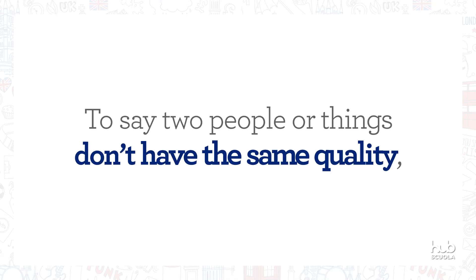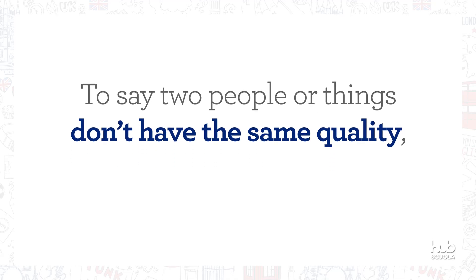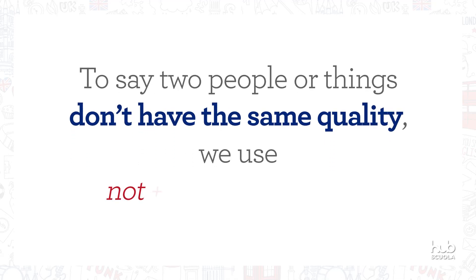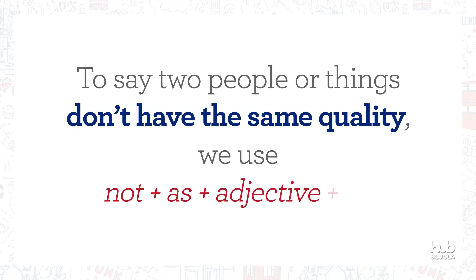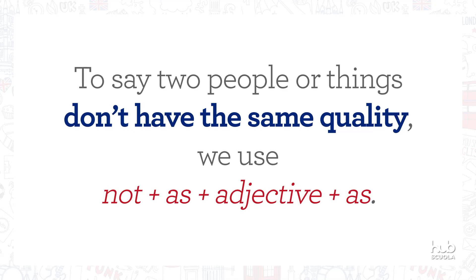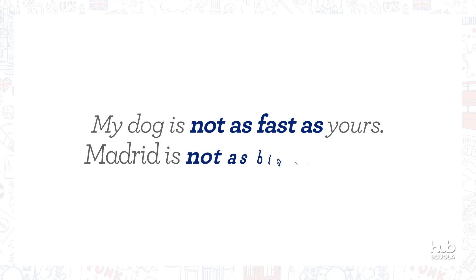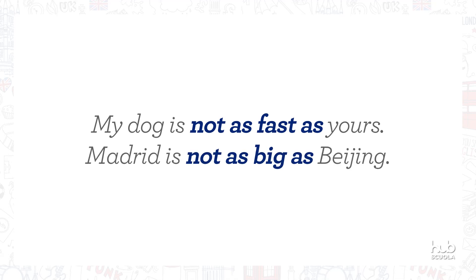To say two people or things don't have the same quality, we use 'not as' plus adjective plus 'as'. For example, my dog is not as fast as yours. Madrid is not as big as Beijing.